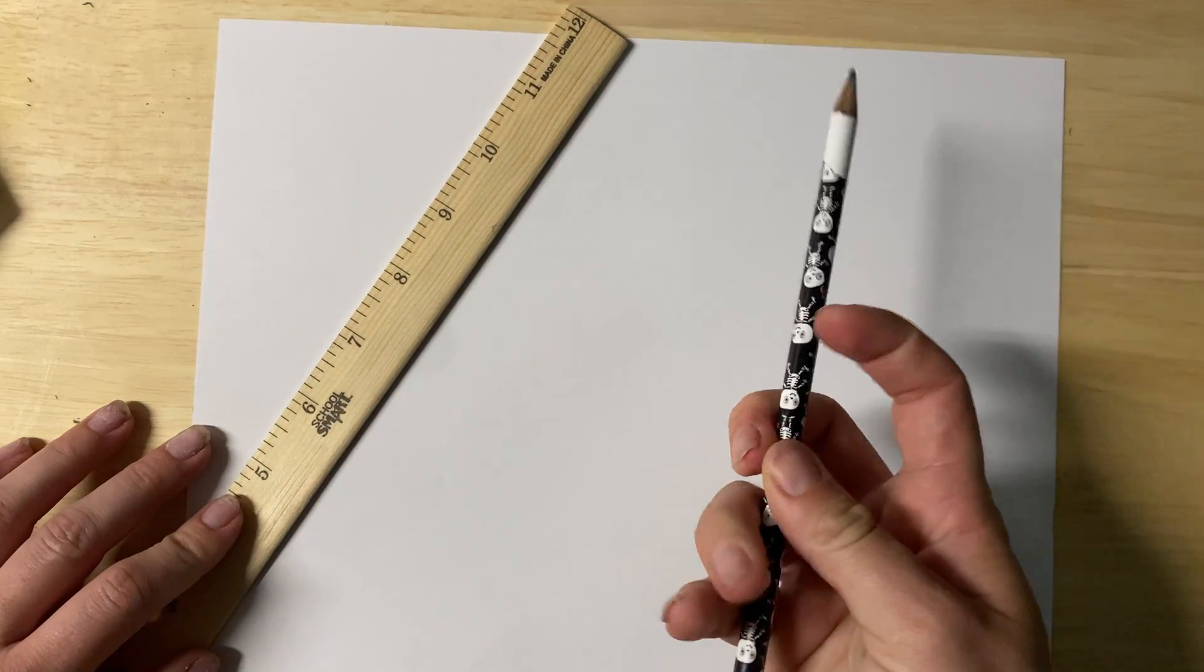Today we will be practicing one-point perspective. You will need a piece of paper, a ruler or a straight edge, and a pencil.